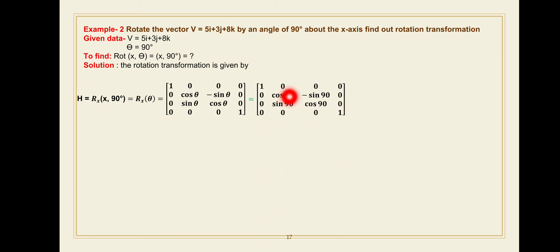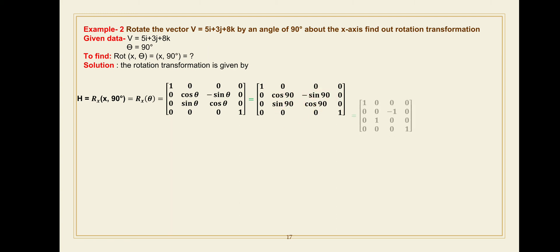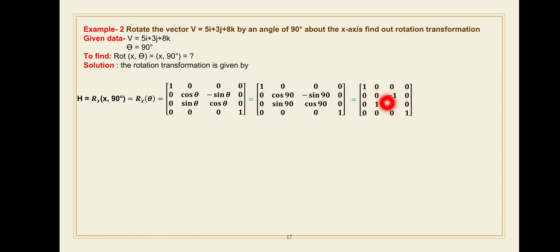Substituting theta equals 90 degrees: cos90 equals 0 and sin90 equals 1. So the rotation matrix becomes: [1 0 0 0 / 0 0 minus1 0 / 0 1 0 0 / 0 0 0 1]. This is the rotation matrix for 90 degrees about the x-axis.